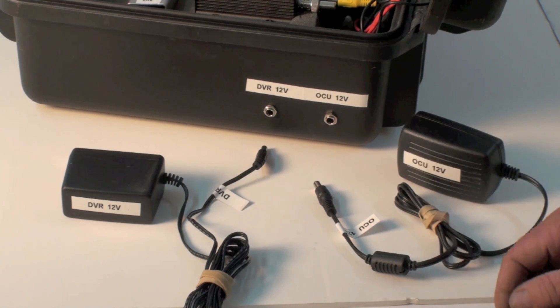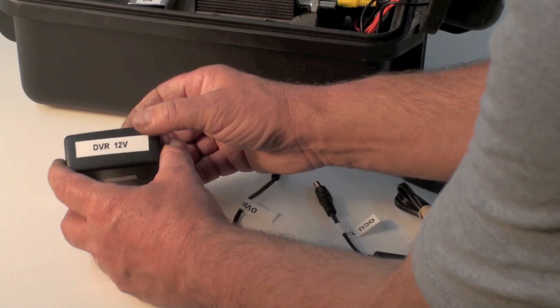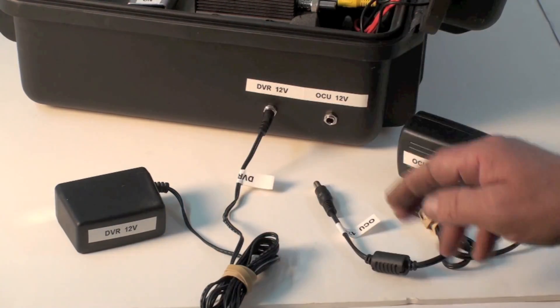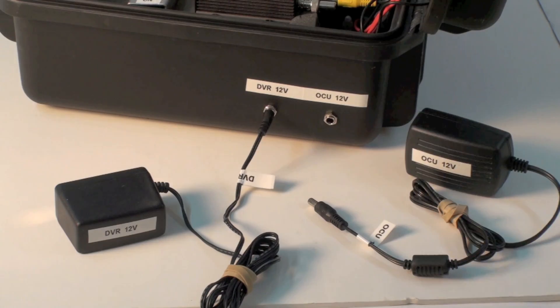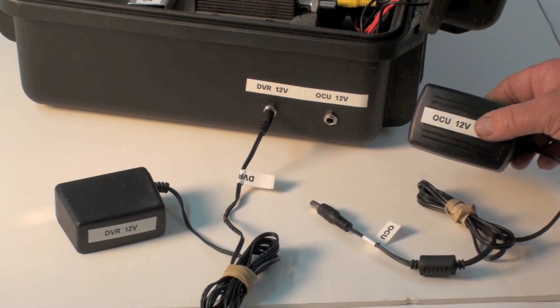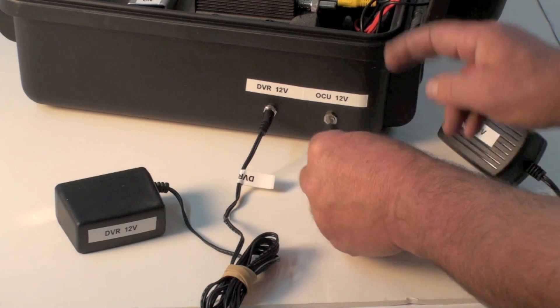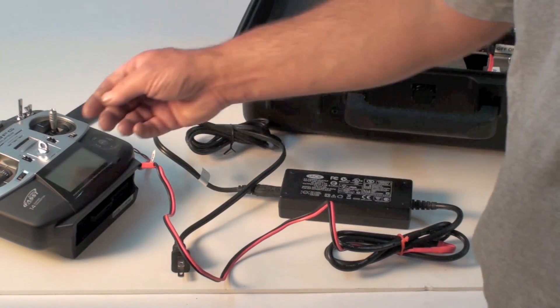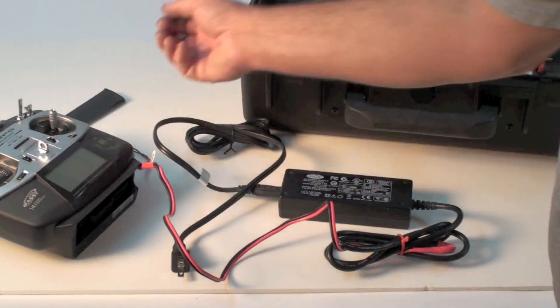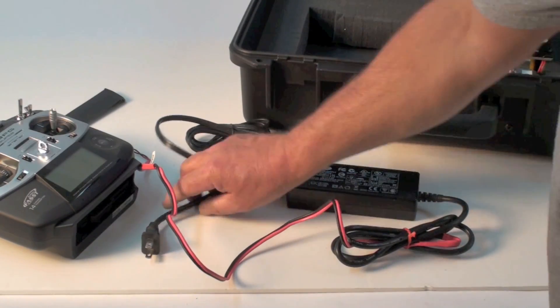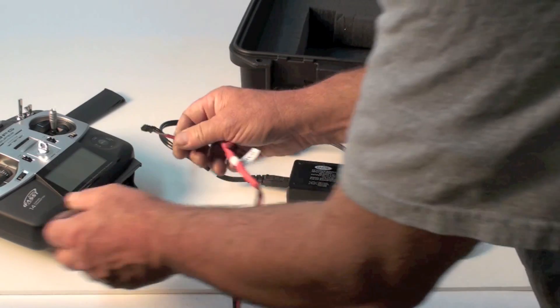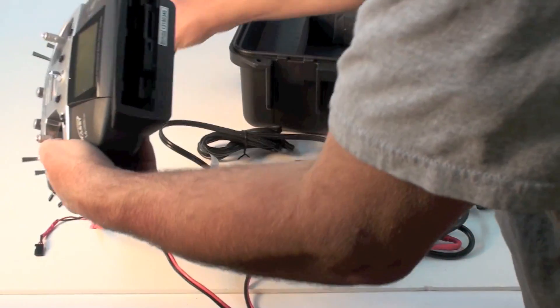These are the power adapters for the OCU or operators control unit. One is called DVR 12 volt and gets plugged into the jack or port labeled DVR 12 volt. The other one is called OCU 12 volt in and it's also labeled so you just plug it in here. This is the AC adapter for the radio so we're bypassing the battery. You can plug this in directly to the wall and on the other end is a small plug with a tab and it goes into the bottom of the radio.